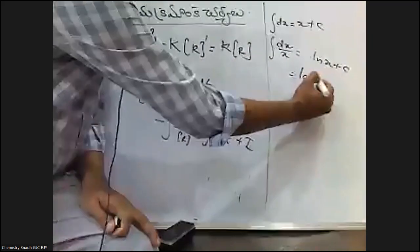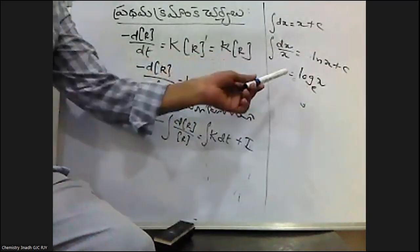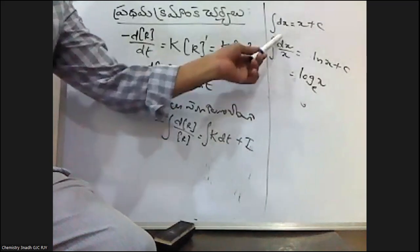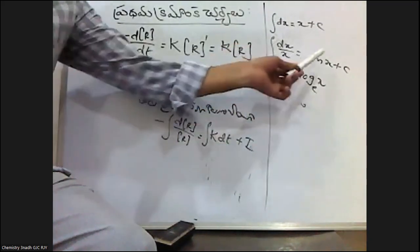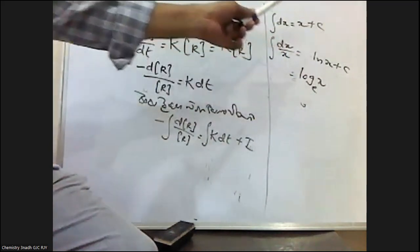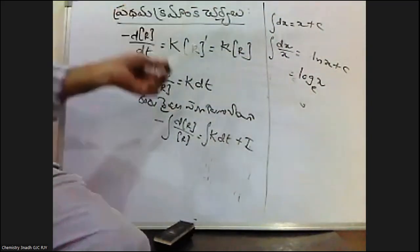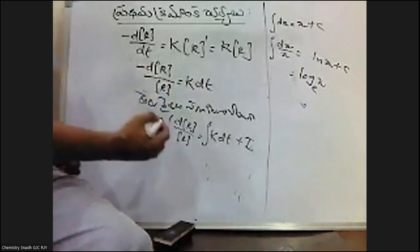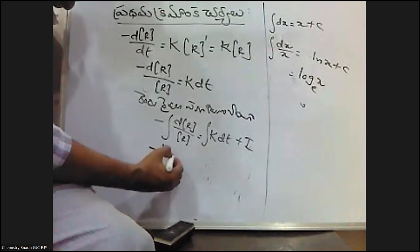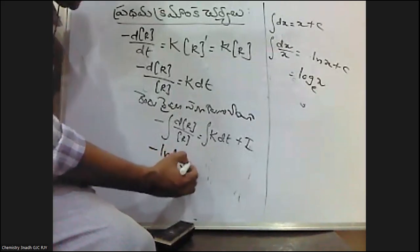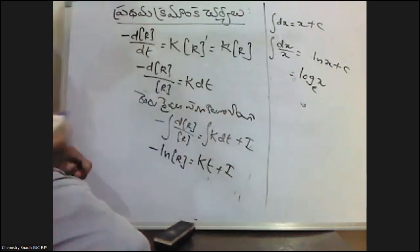ln x is log base e of x. Using the formula for integral dx by x, we get minus ln R is equal to kt plus i, where i is the integration constant.